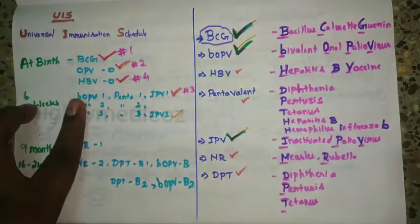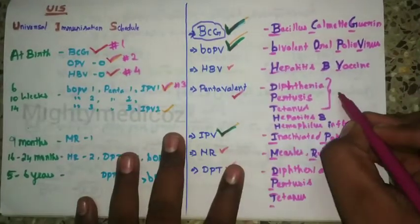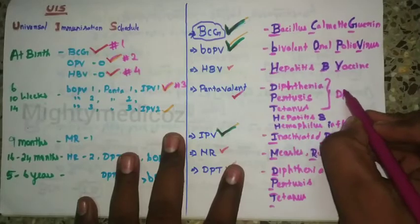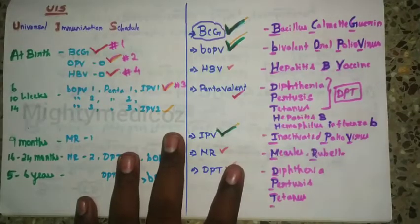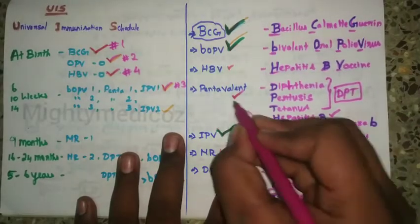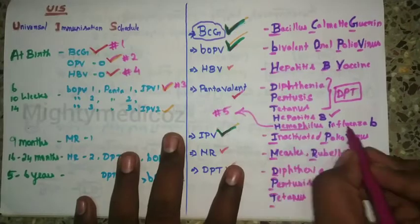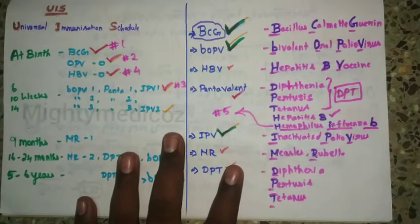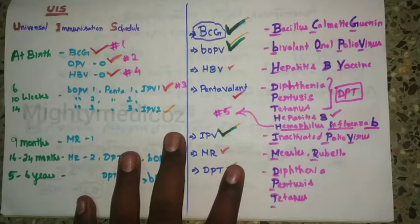We will discuss the pentavalent, which includes diphtheria, pertussis, tetanus — DPT. And now, we will discuss number five: the Haemophilus Influenzae B vaccine. This is a microorganism-related vaccine. So let's go into our video.